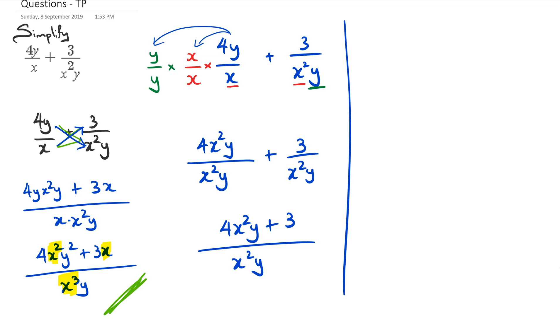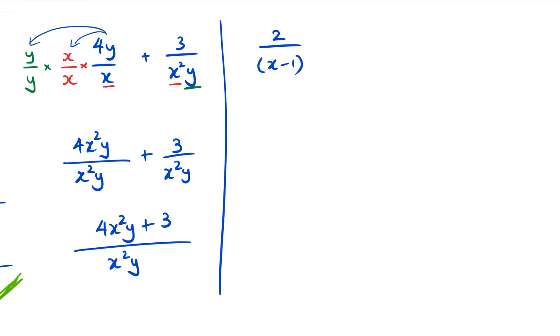Let's say you have something like this: 2 over x minus 1, I'm just going to space it out here, plus 3 over x squared minus 1. The issue with this one is that if you do cross multiplication, what ends up happening is you're going to end up with a cubic in the denominator.